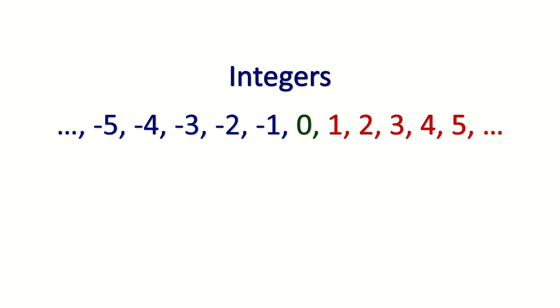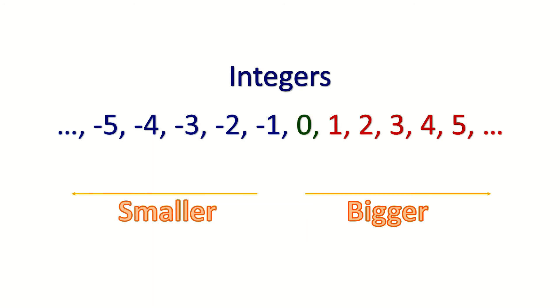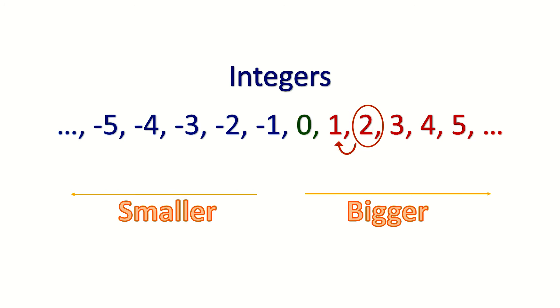So that's just two examples of where we use positive and negative integers in our daily lives. Now let's look at these numbers one more time. As we go to the right, the numbers get bigger and bigger. As we go to the left, the numbers get smaller and smaller. Let's do a few examples with numbers you are familiar with: 1 is bigger than 0 but smaller than 2; 2 is bigger than 1 but smaller than 3; 3 is bigger than 2 but smaller than 4.